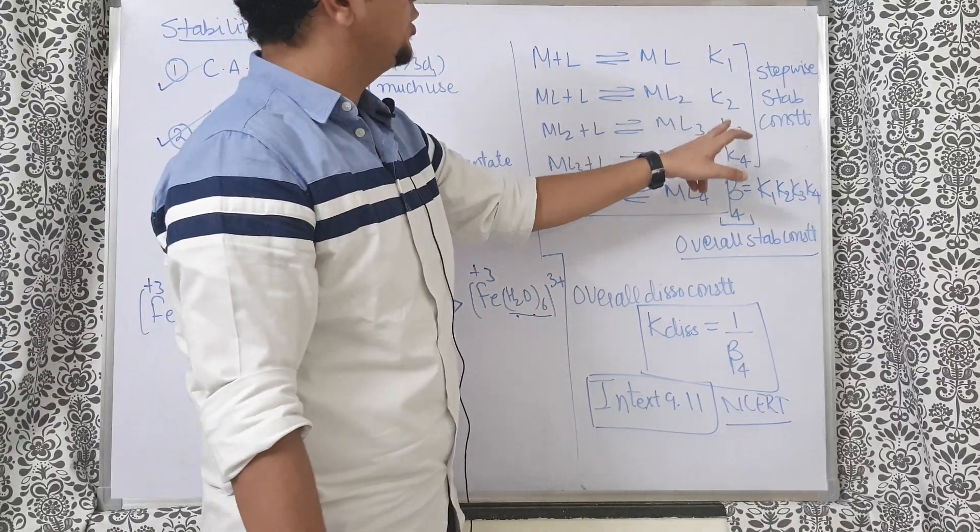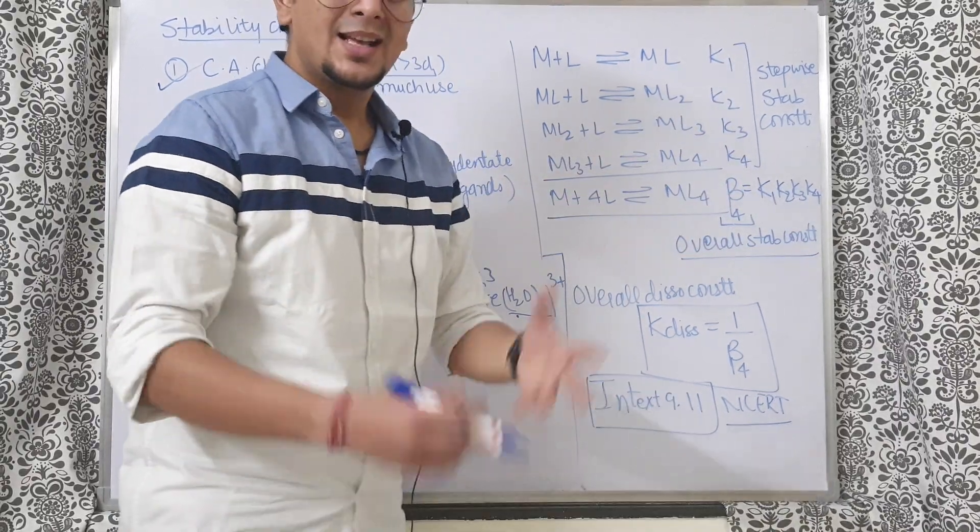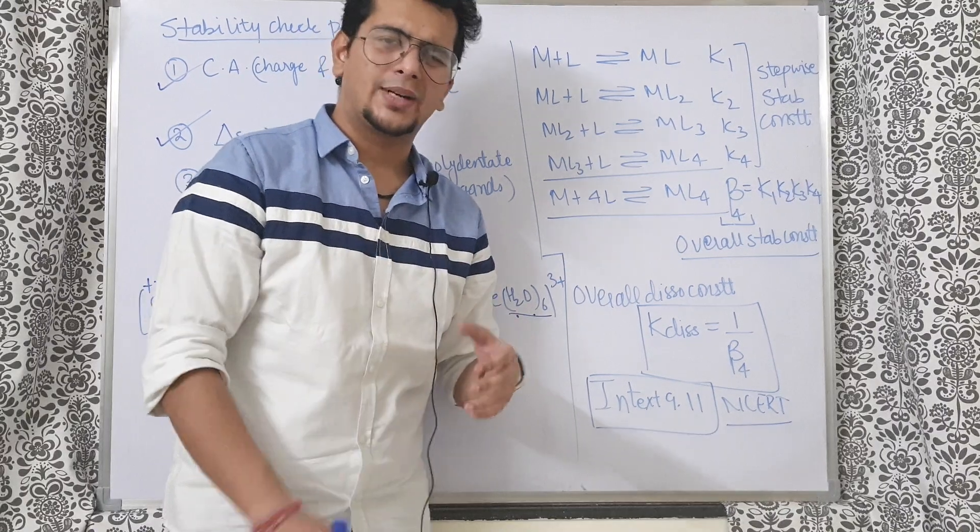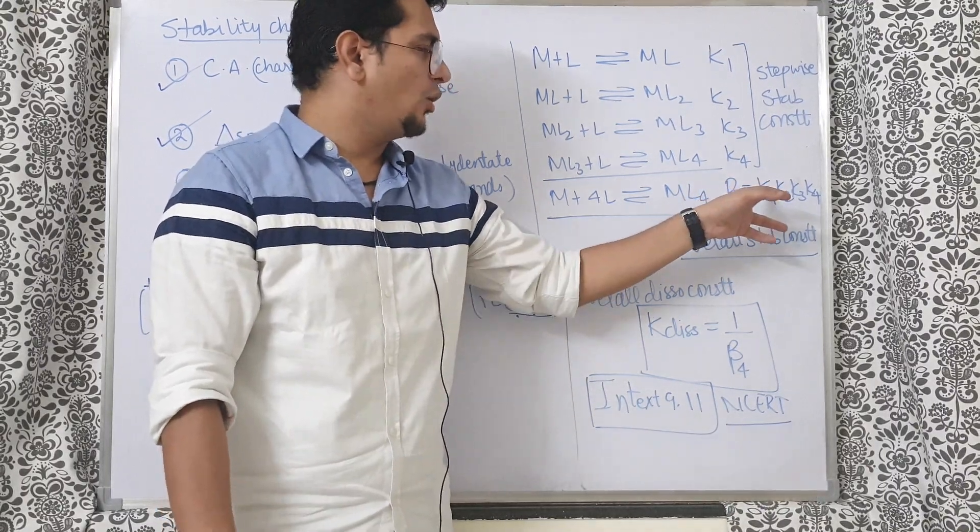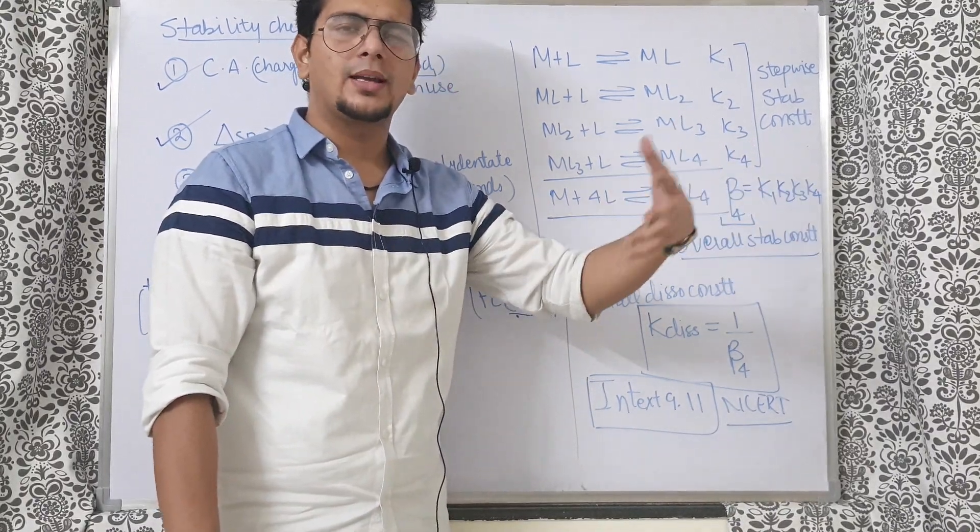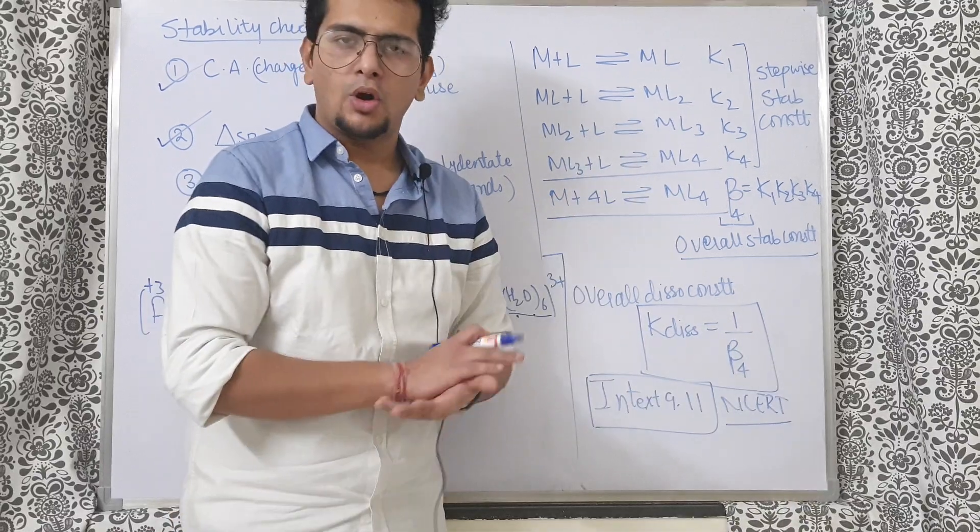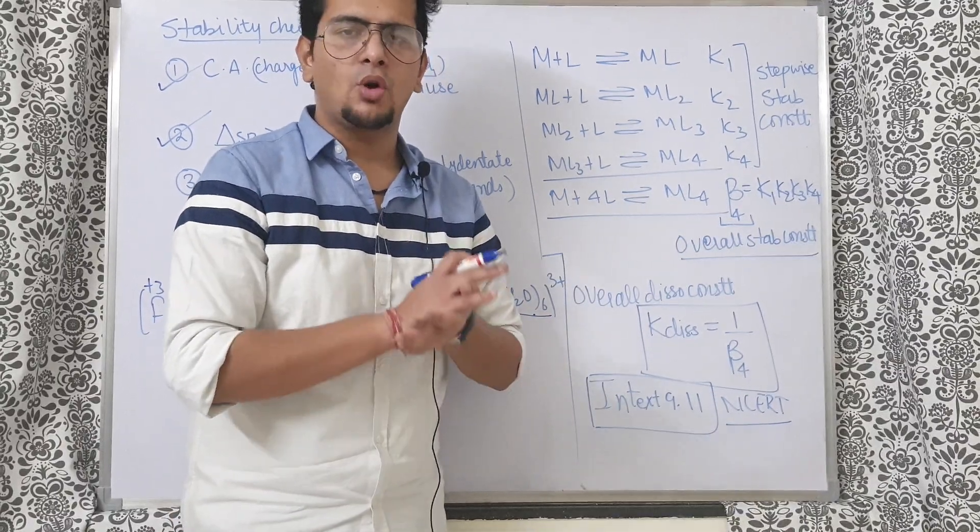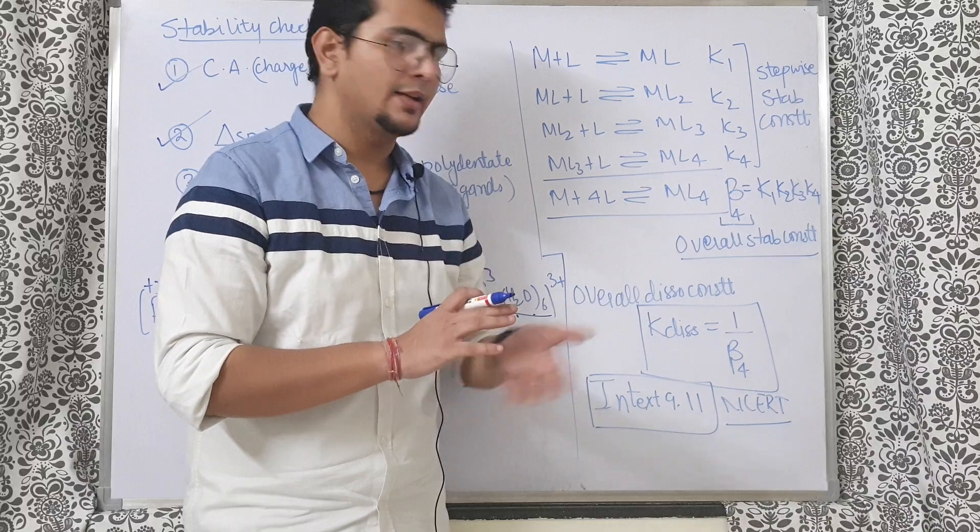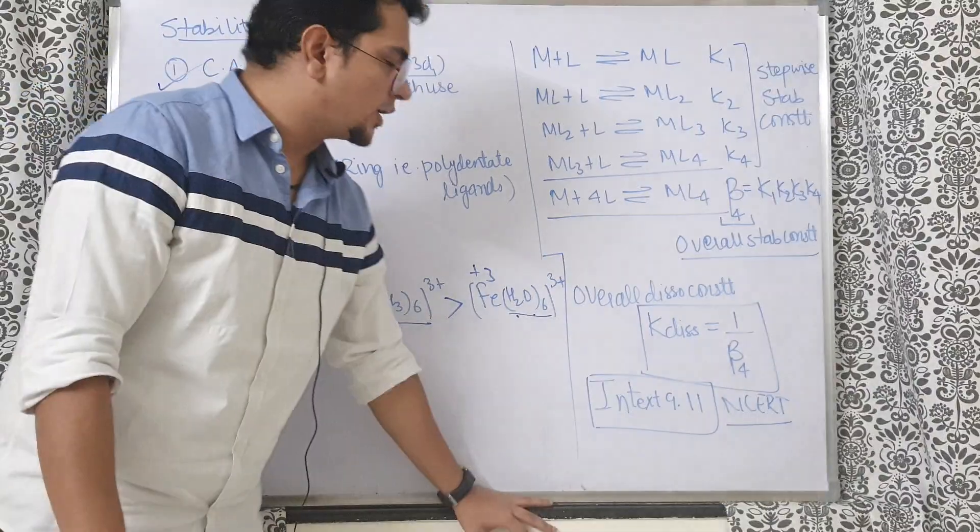Sometimes they can ask in the form of log also directly. So log beta will be log K1 plus log K2 plus log K3 plus log K4. Simple log property - log of a into b is log a plus log b. That also we can use here. Overall dissociation constant will be opposite of the formation or stability constant.